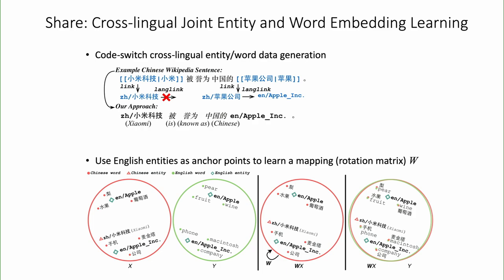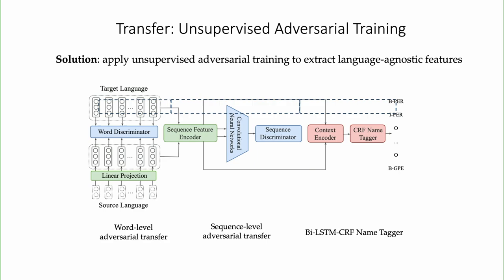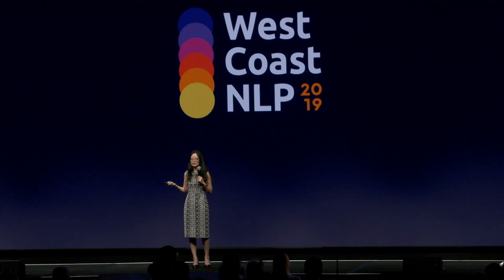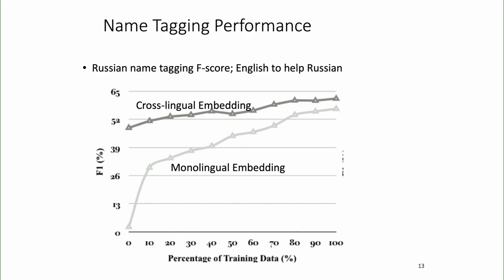Of course we cannot do this alignment perfectly because there are always words in one language that don't exist in another — for example, in Chinese we don't say 'oops' because we're not that emotional. So you'll see outliers. But the two spaces can be reasonably aligned for entity extraction purposes. After doing that, we can just train the model from English and apply it to Chinese. We also train a word discriminator and sentence discriminator: if they cannot distinguish the original sentence from the target versus source language, that means it's a good sentence or word, and we use that for training.